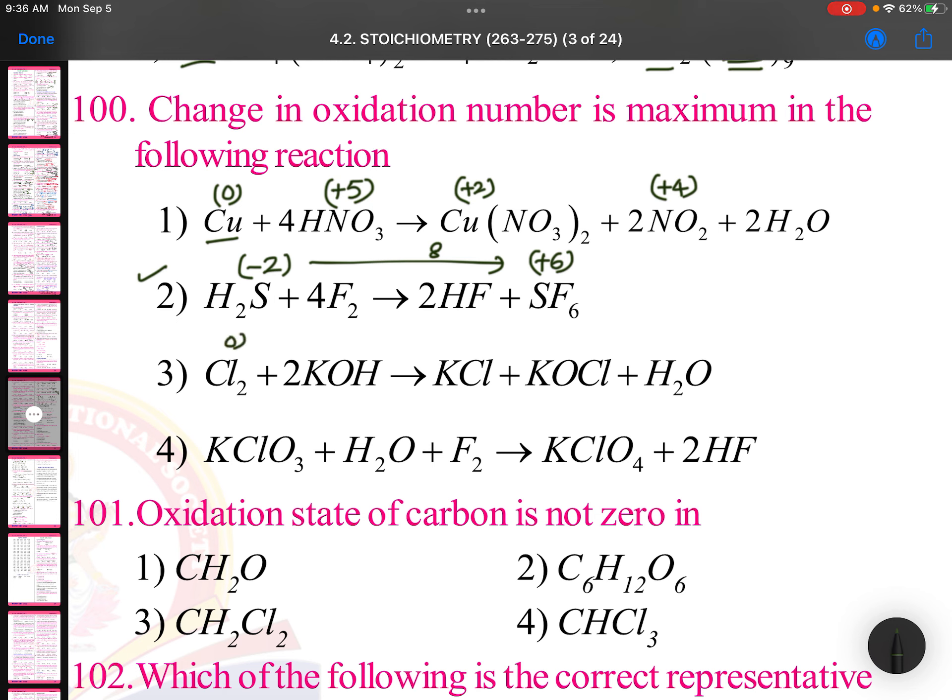Chlorine 0 changes to minus 1 and plus 1 disproportionation. KClO3: chlorine will be plus 5 changes to plus 7. So the maximum state you can see in case of sulfur.